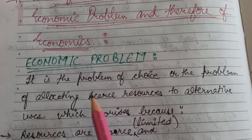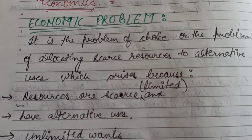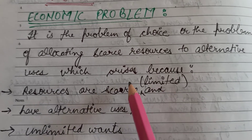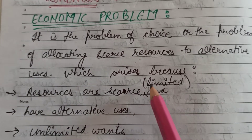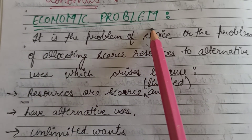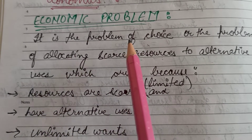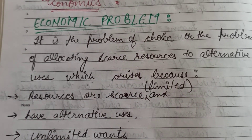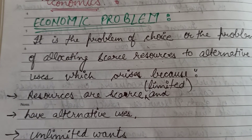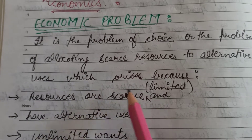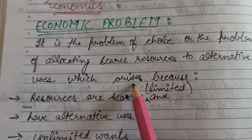Why do these problems arise? The basic reasons are that the resources are scarce or limited. No one has unlimited money or unlimited resources, because if there is no limit on resources the economic problem will not be there. The next reason is that the resources have alternative uses, because of which the problem of choice occurs. And the last reason is unlimited wants — as consumers we have a number of wants which we want to satisfy by using these resources. These are the basic three reasons why the economic problem arises in an economy.